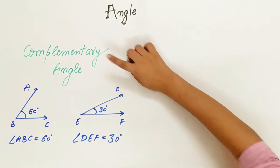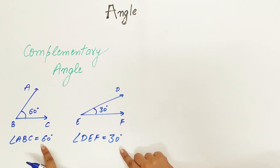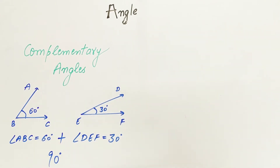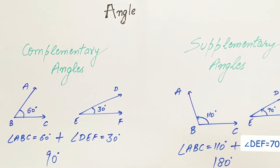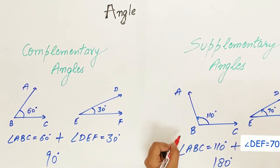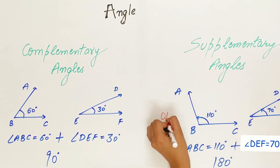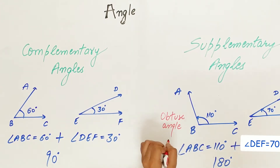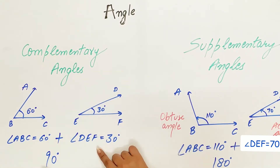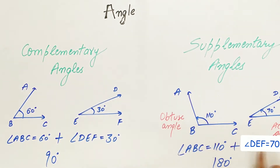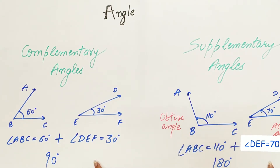In complementary angles, the sum of two angles is equal to 90 degrees. Two angles whose sum is equal to 180 degrees are called supplementary angles. In complementary angles the sum is 90 degrees; in supplementary angles the sum is 180 degrees. Remember, these are not adjacent angles.